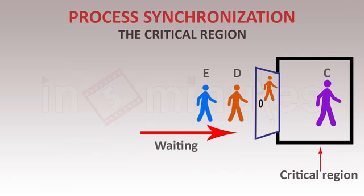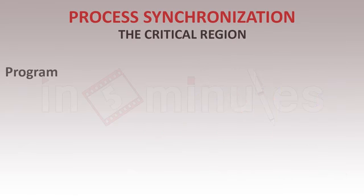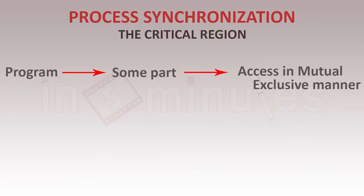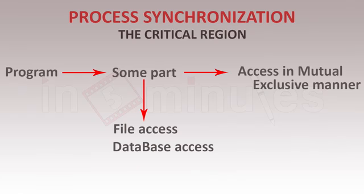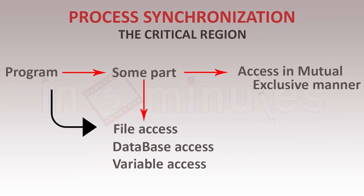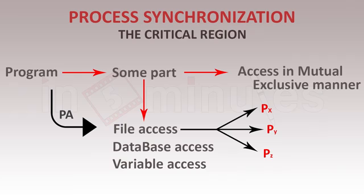To understand why we need a critical region practically: every program has some part that needs to be accessed in a mutually exclusive manner. This may refer to file access, database access, or variable access. When a program is accessing a particular file that is used by 10 other processes, changing that file affects processes X, Y, and Z, which we don't want.